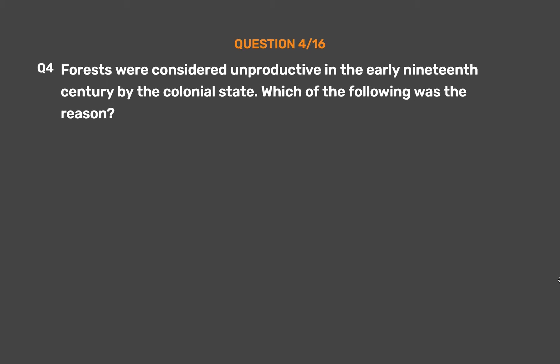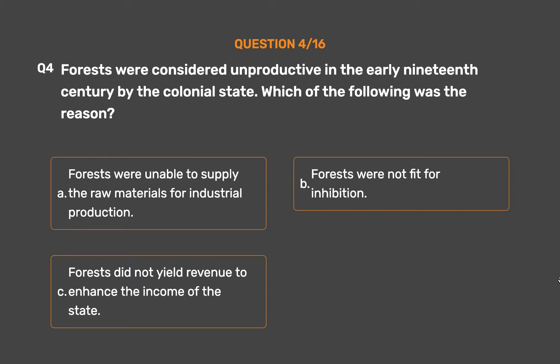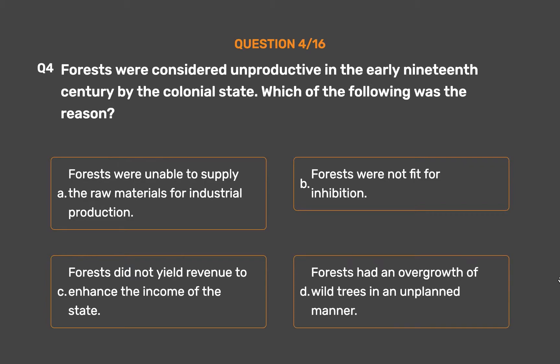Question 4: Forests were considered unproductive in the early 19th century by the colonial state. Which of the following was the reason? Option A: Forests were unable to supply the raw materials for industrial production. Option B: Forests were not fit for habitation. Option C: Forests did not yield revenue to enhance the income of the state. Option D: Forests had an overgrowth of wild trees in an unplanned manner.